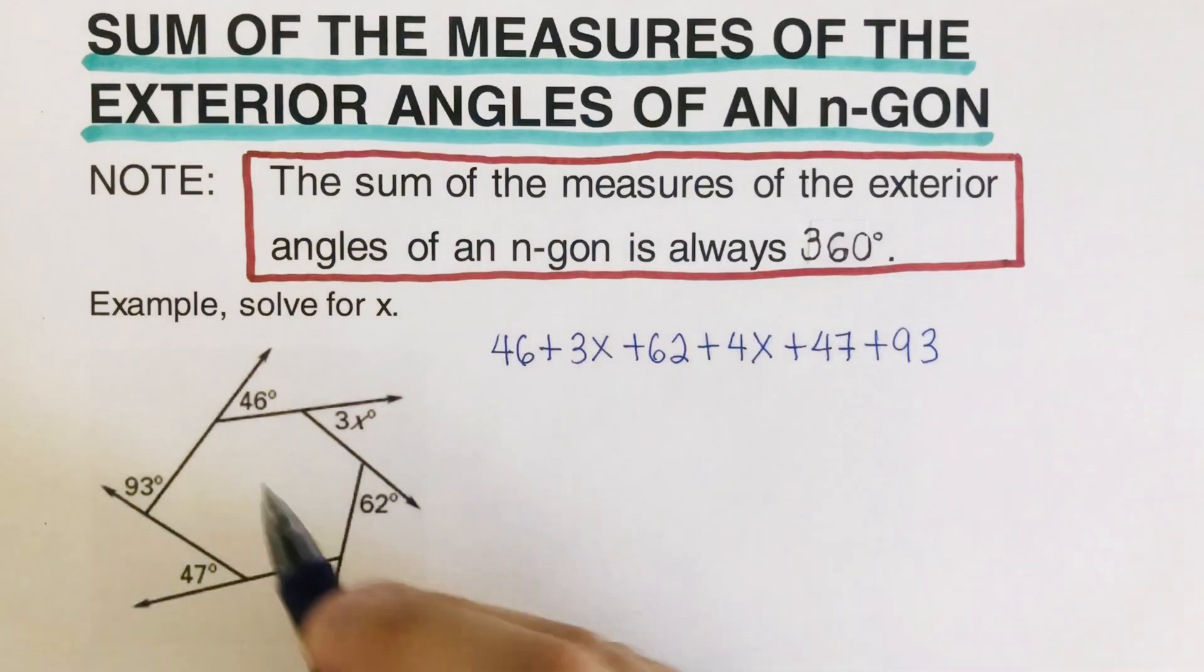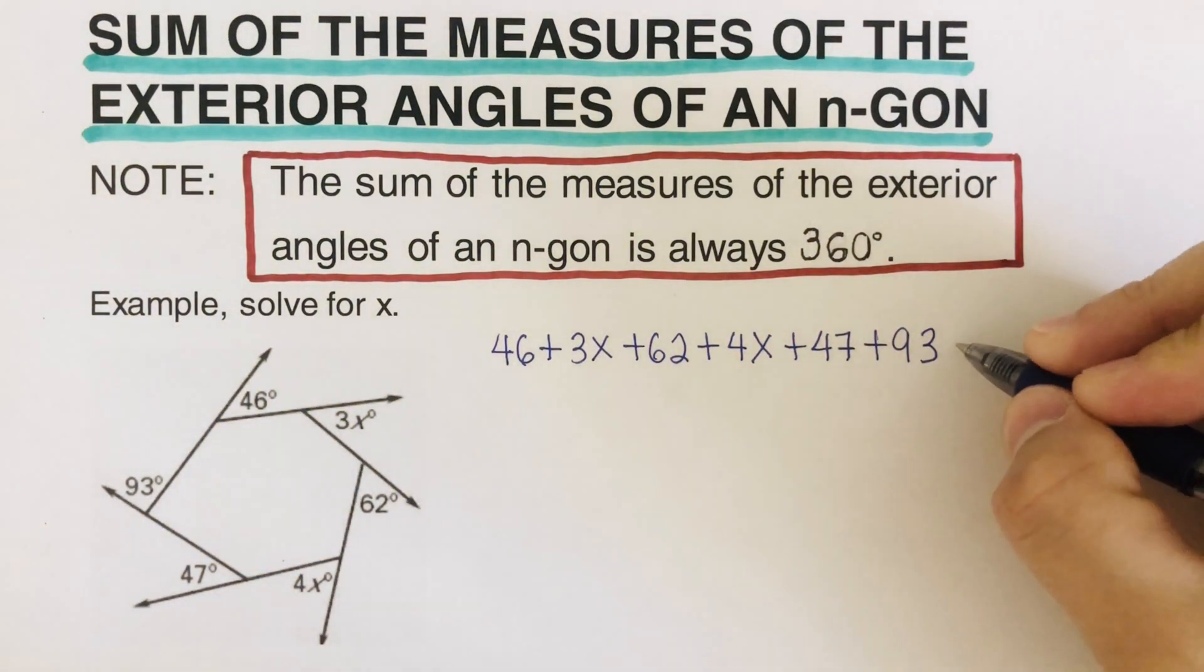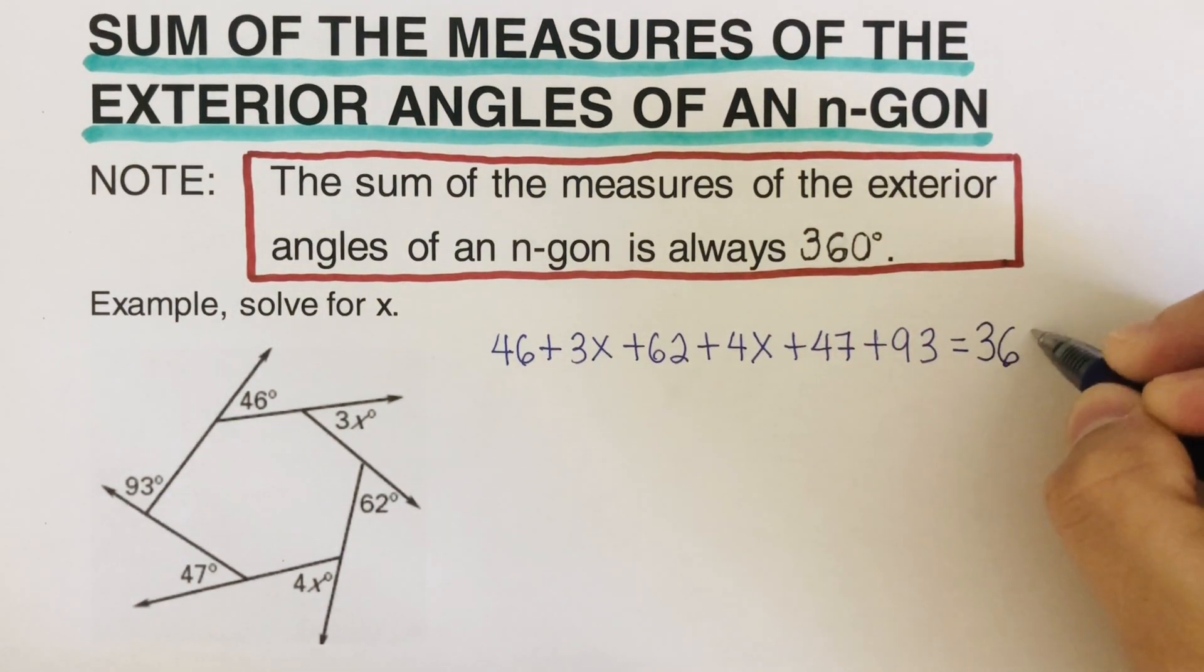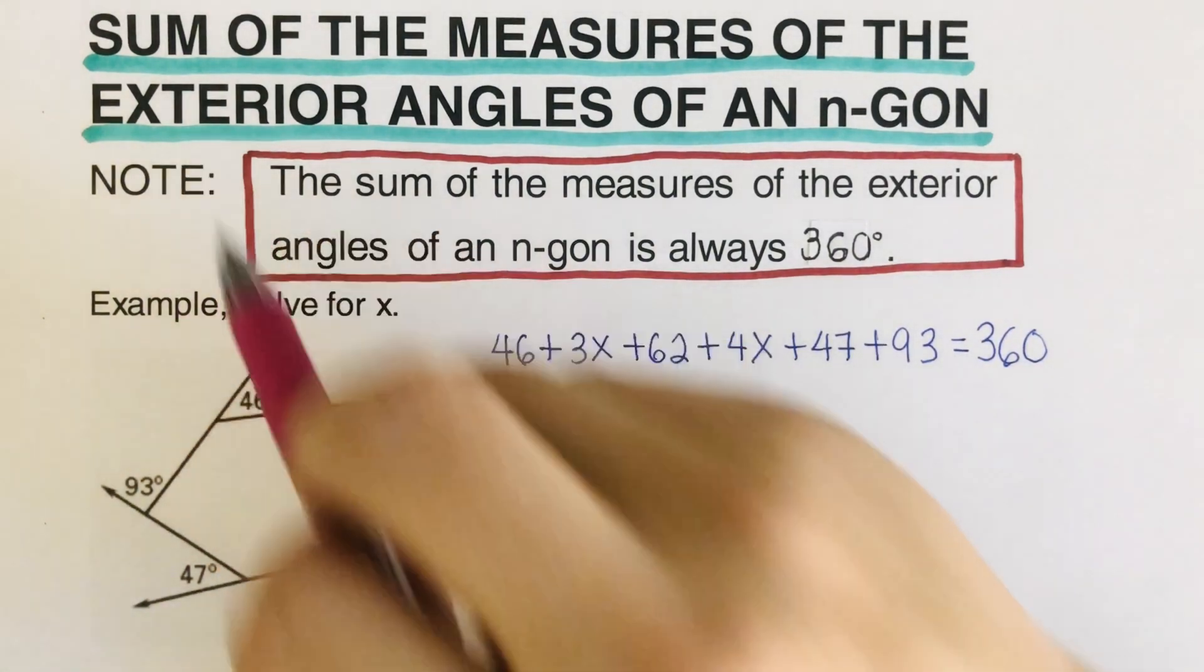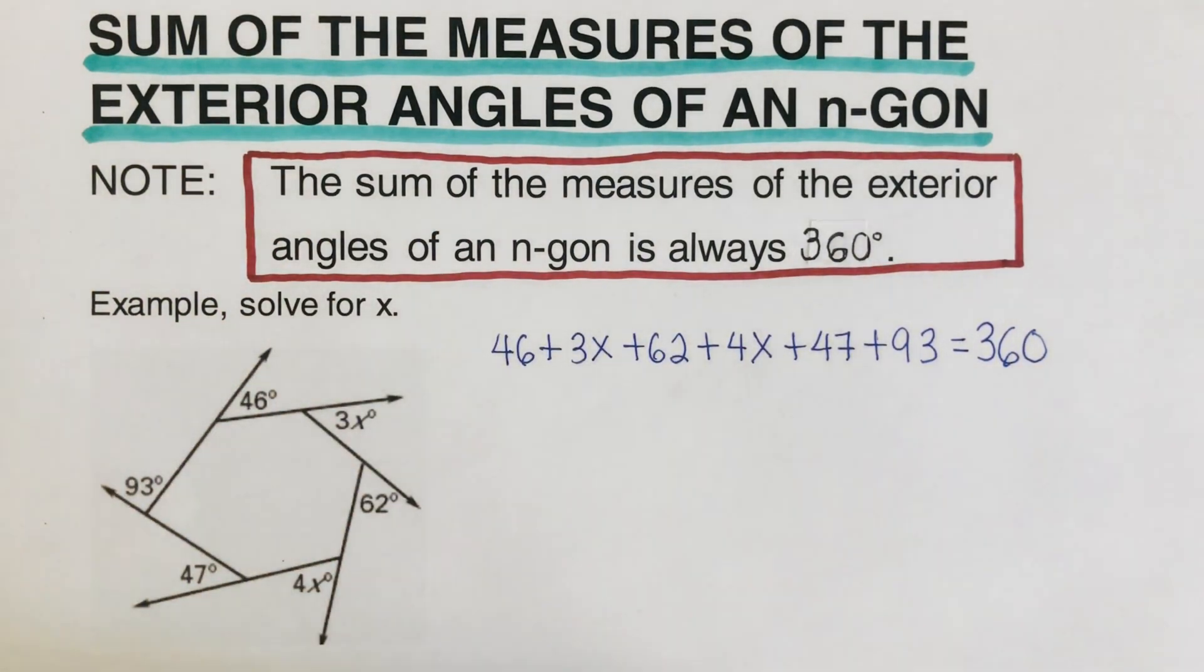Again, all of these - 46, 3x, 62, 4x, 47, 93 - equal 360 because this is the sum of all the measures of the exterior angles of a polygon.